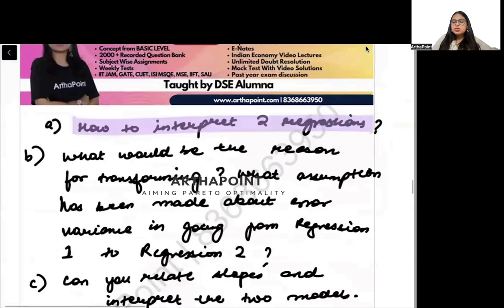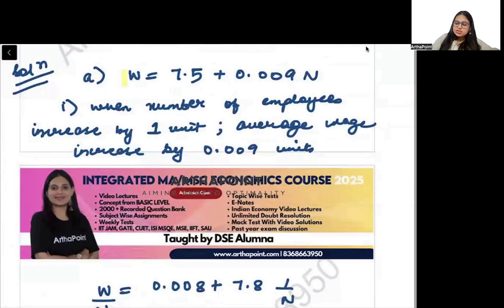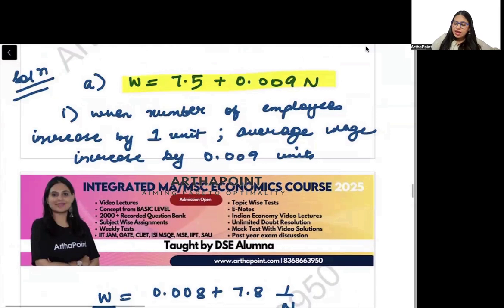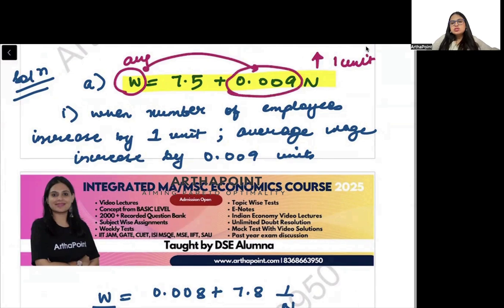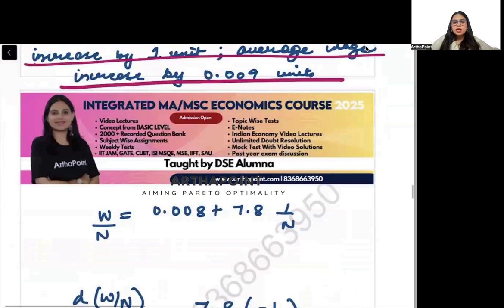Question number one asks to interpret the two regressions. Let's look at the first one. This is my first regression model. As my number of labor increases by one unit, the average wage increases by 0.009 units. So when the number of employees increases by one unit, average wage increases by 0.009 units.